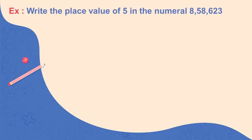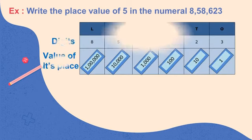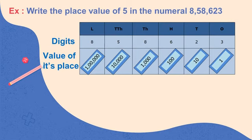Let's take an example: write the place value of 5 in the numeral 8,58,623. In this numeral, 8, 5, 8, 6, 2, and 3 are the digits. 3 is in the ones place (value: 1), 2 is in the tens place (value: 10), 6 is in the hundreds place (value: 100), 8 is in the thousands place (value: 1,000), 5 is in the ten-thousands place (value: 10,000), and 8 is in the lakhs place (value: 1 lakh).